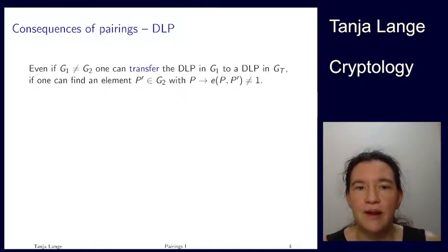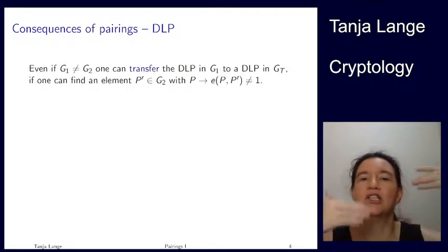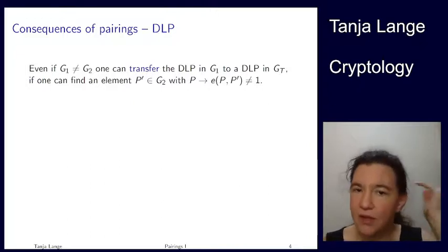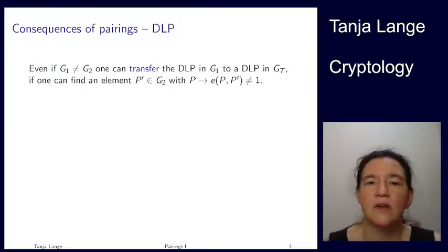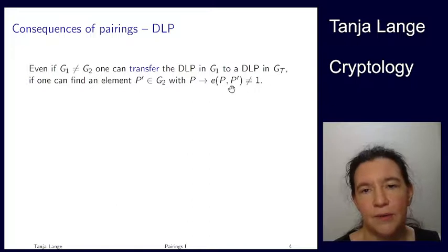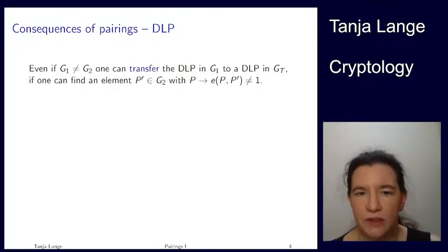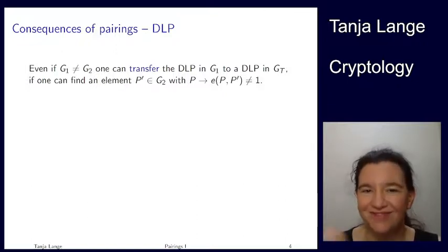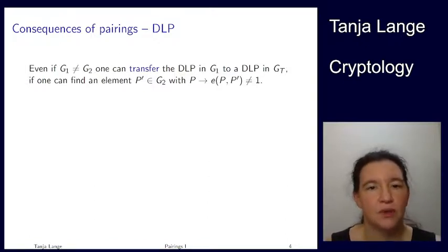Another consequence of pairings, which is less restrictive but still assumes that we can efficiently compute pairings, so our k is not gigantic, is that we can compute a discrete log transfer. So in order to compute this transfer, we have G1 not equal to G2, and we want to find some P' in the second group. Let's assume that we found one of those. G2 has all different elements, and so we just sample randomly, so as long as G2 is not too hard to work with, we can find such a P'.